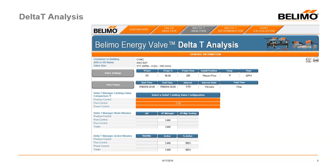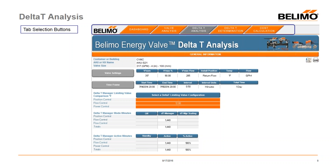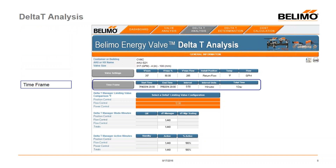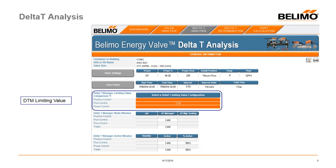The next tab is the Delta T Analysis tab — this is where it gets interesting, when we start really looking at what's going on in the system. We again start with the dashboard navigation and display customer, air handler, valve size, valve settings, and the time frame of data. Down below is the delta T limiting value by control mode, which shows based upon different delta T values what's going on in your system. A dropdown box lets you select values such as 10, 12, or 14 degrees to filter what's happening in the valve at each delta T limiting value — you can even compare them side by side.